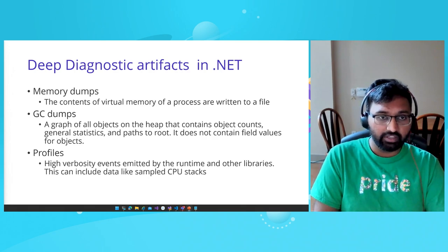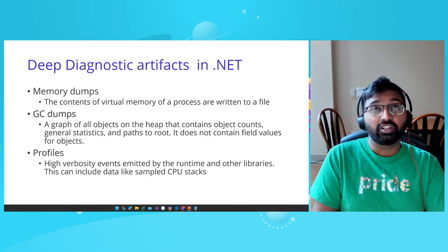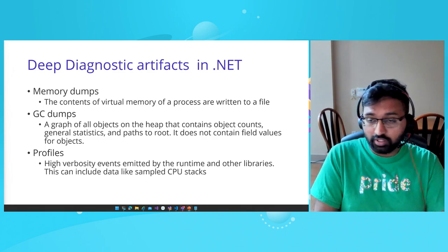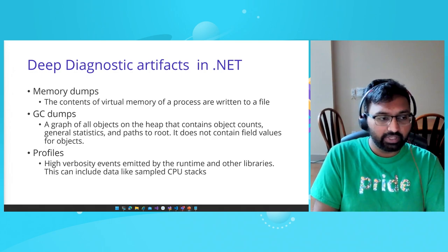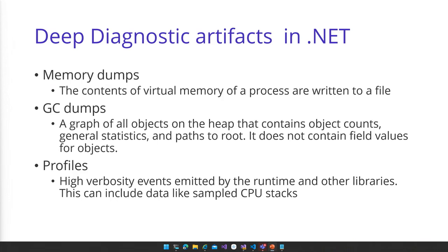Based on options specified at collection time, a memory dump could be all virtual memory pages, trimmed, or just the heap. GC dumps are a graph of all objects on the heap and don't require collecting a super large artifact like a memory dump. They're useful for memory leak investigations — you can look at object counts at one time period, collect another GC dump at a second time period, look at the deltas in number of objects allocated, and use that to find things like memory leaks.